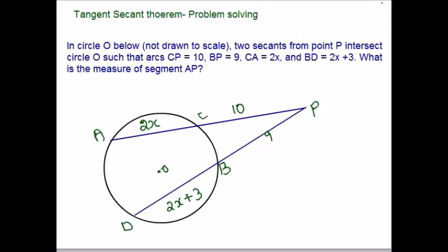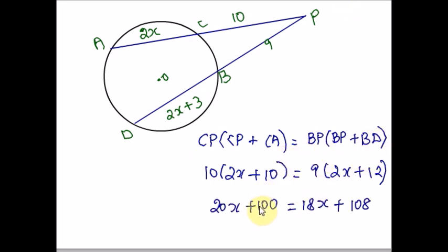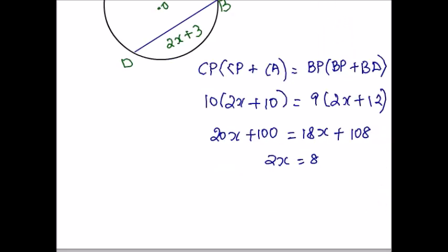Please look at this example. Two secants are drawn on the circle and the measurements for some segments are given. So what is the measure of segment AP? We are supposed to find the value of X and plug it back in to find the value of AP. The products of the external segment and the entire secant must be equal for both secants. So we plug in all the given information. Let us solve this equation for X. By distributing 10, I am getting 20X plus 100. 18X plus 108. Combining all the X terms and the numbers, we will get 2X equal to 8. Dividing both sides by 2, X equals 4. So far, we found the pronumeral.